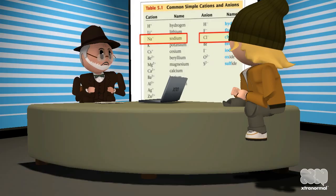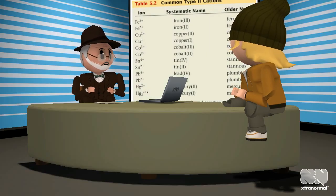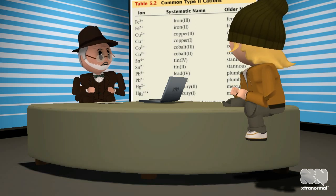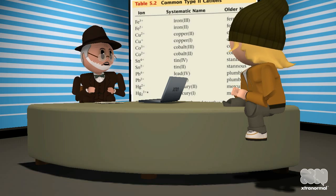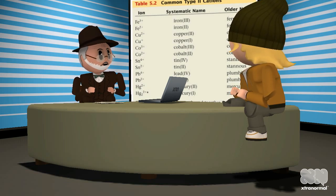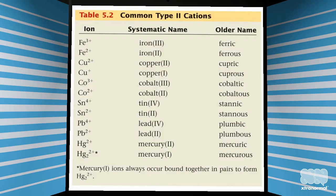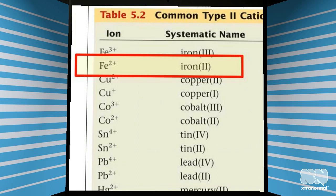What about type 2 naming? Type 2 naming is a little bit more complicated, but just a little. Because the metals that follow this rule can have more than one charge, you have to include the charge information as part of the name in the form of a Roman numeral. Remember, the metals here are the transition metals. Therefore, if you have iron with two positive charges, you would use iron 2.